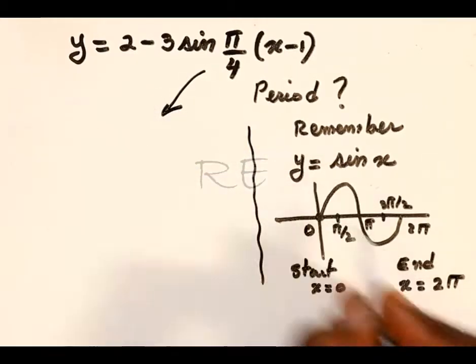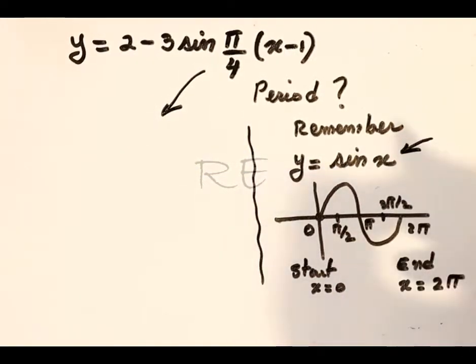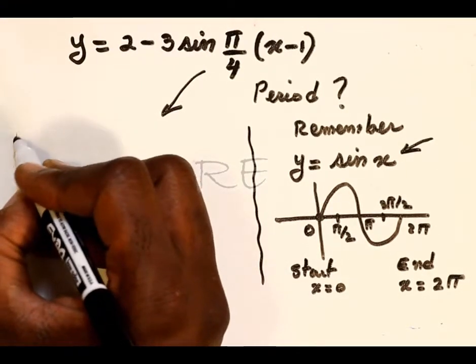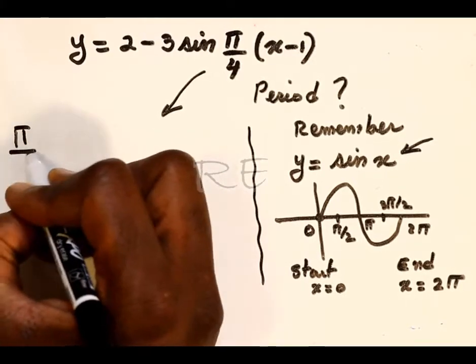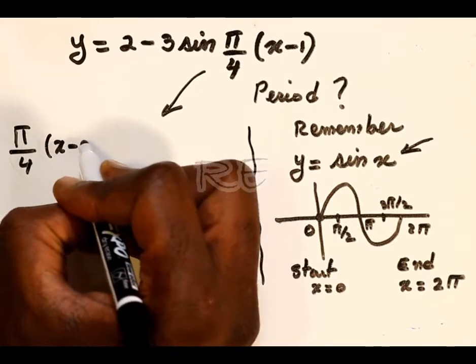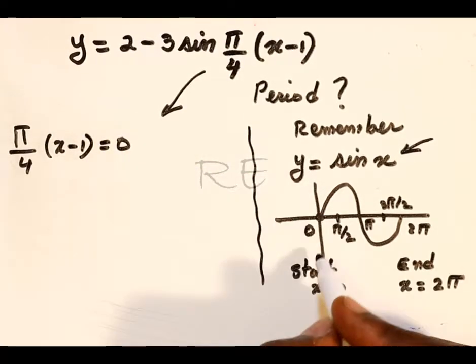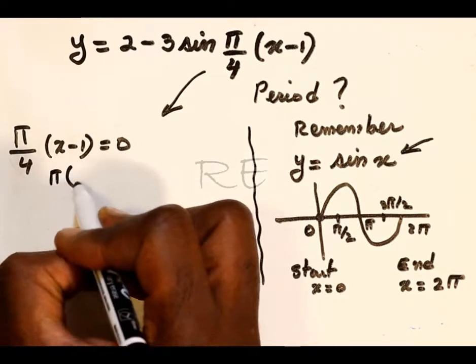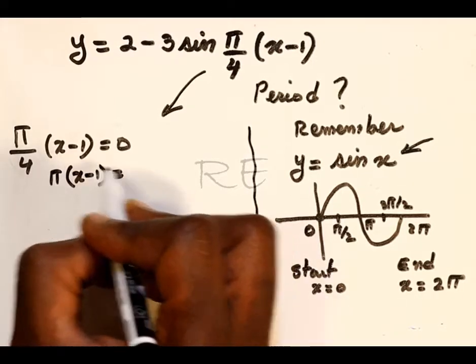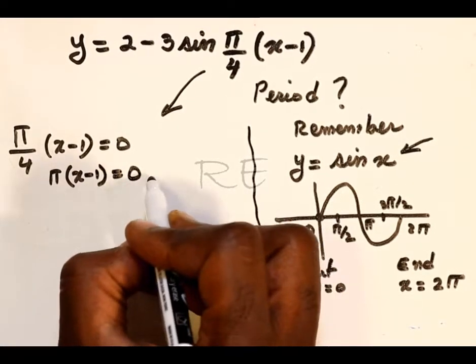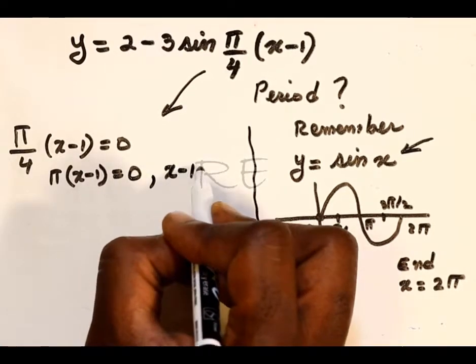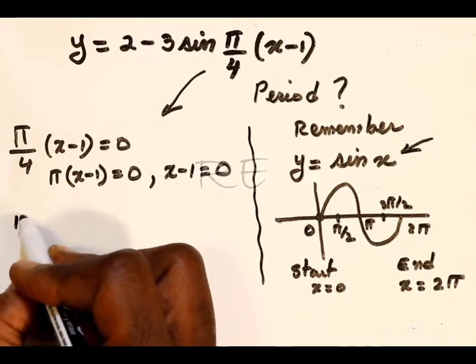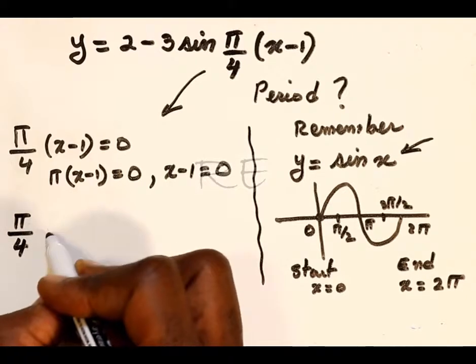Interesting. So now look at what we have. π over 4 is the coefficient of the variable, and x minus 1 supposedly is the expression that represents the angle. So we're going to set it up equal to 0 to start. 4 times 0 is 0, so π times x minus 1 equals 0. Therefore, x minus 1 equals 0 divided by π, which is 0. So basically it starts at x minus 1 equal to 0, which is x equal to 1.